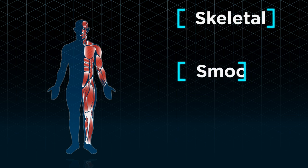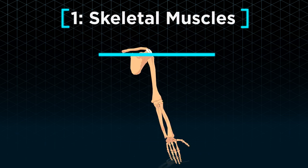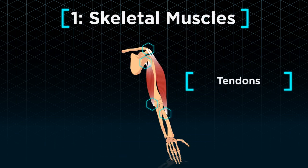There are three types of muscles in our body: skeletal, smooth, and cardiac. Skeletal muscles, as suggested in their name, are attached to our skeleton or bones via tendons.